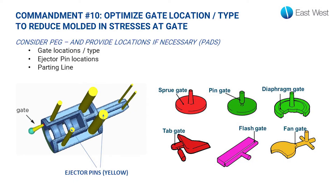The last commandment, number ten, is optimizing gate location. The gate is the area that material enters the mold, and there are several gate types depending on part geometry and how the material will fill the mold. We might start with a standard sprue gate or tab gate, and if issues arise — such as incomplete fill — we might use a fan gate, which is wider and allows material to flow in better. You should insist that your injection molder show you the gate locations and types, the locations of the ejector pins that push the part off the mold, and the location of the parting line where the two mold halves separate.